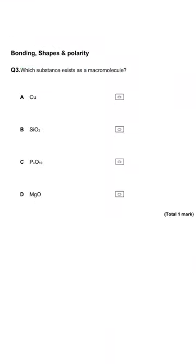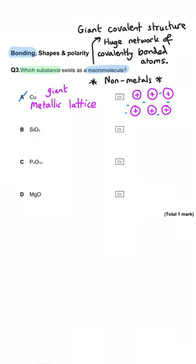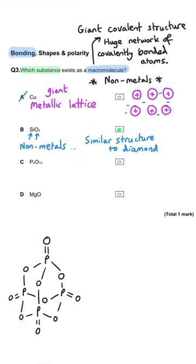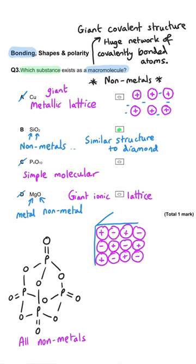Which substance exists as a macromolecule? A macromolecule, sometimes known as a giant covalent structure, is formed when non-metals bond together in a huge repeating lattice pattern. Copper in A will be a giant metallic lattice — wrong answer. Silicon dioxide is only composed of non-metals, so it's a possibility and is the correct answer — it forms a giant covalent structure similarly to diamond. P4O10 is a simple molecule, and MgO is a metal bonded to a non-metal, so a giant ionic lattice.